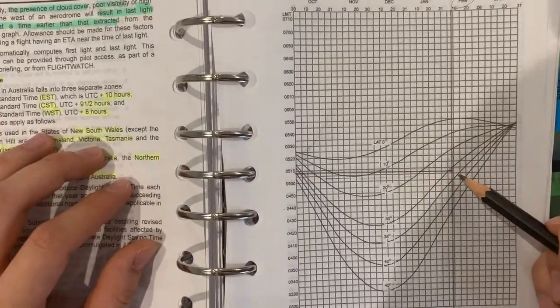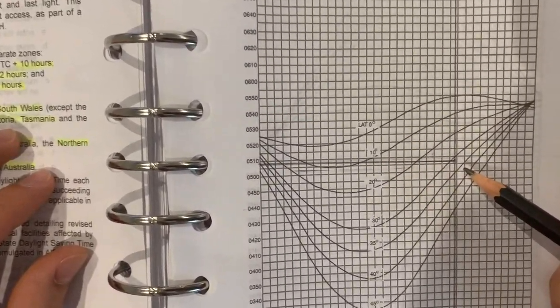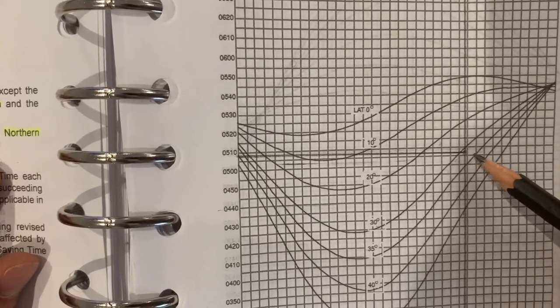The cross section of this point and vertical line will be your LMT, which is 05:06.